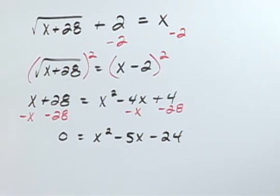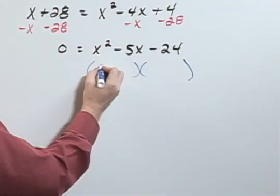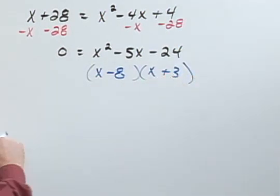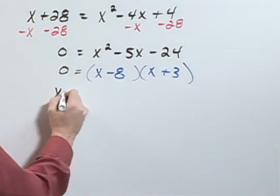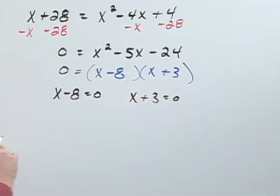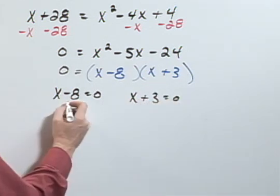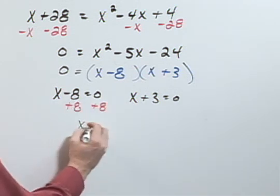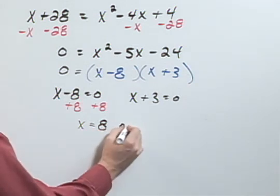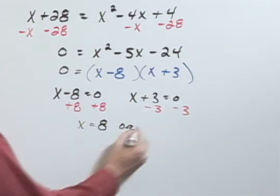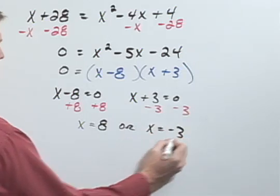We can now factor this right side into x minus 8 and x plus 3, of course, equals 0. Setting each piece equal to 0, we have x minus 8 equals 0 or x plus 3 equals 0. Adding 8 to both sides gives me x equal 8, or subtracting 3 from both sides gives me x equal negative 3.